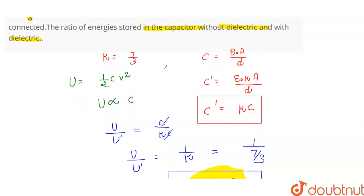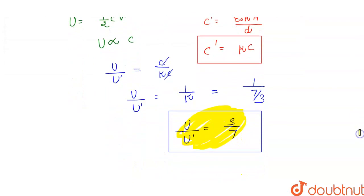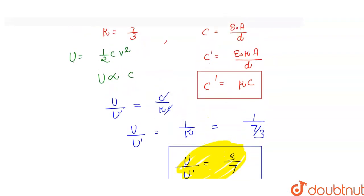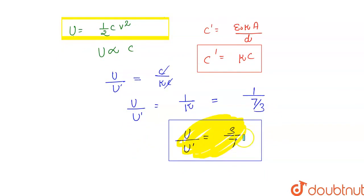Without the dielectric and with the dielectric, with the dielectric U dash becomes kC. K times increases the capacity of the capacitor. If we keep the potential constant, half CV squared, the battery's potential is constant. The energy stored depends on C. So U upon U dash is equal to C upon kC, so U by U dash is equal to 1 upon k, which is 1 by 7 by 3, equal to 3 by 7.